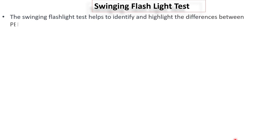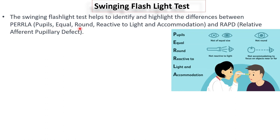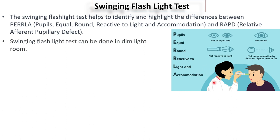The full form of PERRLA is pupils, equal, round, reactive to light and accommodation. It means if there is a pupil which is equal in size, round, and when shown light there will be constriction and accommodation, that means it is a normal pupil. Clinically, we can document it as PERRLA.